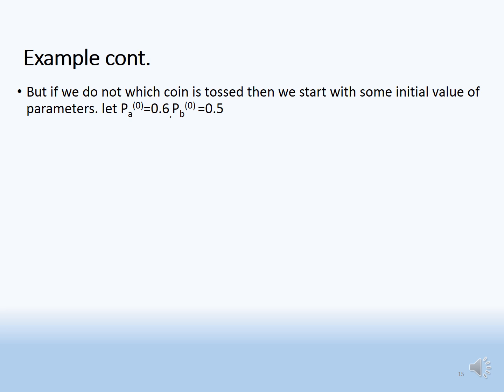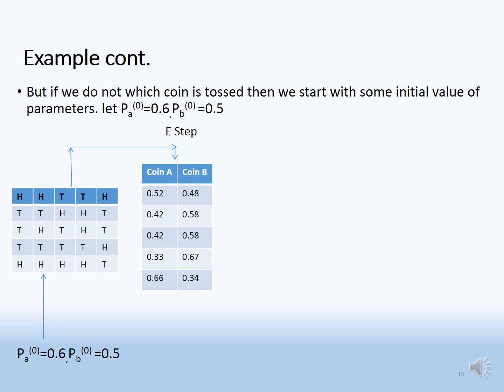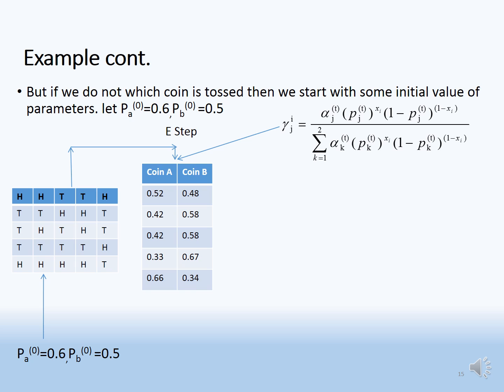In the EM method, we initialize the model parameters — for example, p_A = 0.6 and p_B = 0.5. Starting with these initial values, for each experiment we calculate the probability that coin A was used: for example, experiment 1 uses coin A with probability 0.52 and coin B with probability 0.48. These values are computed using the given formula.